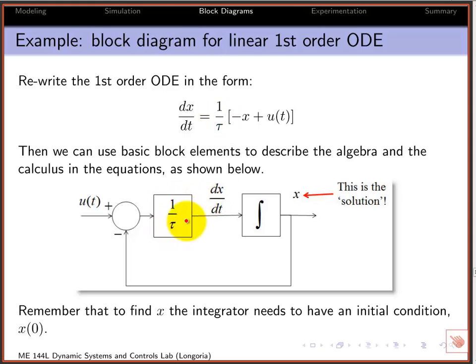And I need to multiply it by the sum of two signals, one is a negative of the state itself, and the other one is an input. So I'm creating this sum with a sum block. So u, and you add that in, and you subtract x. But x comes out of that integration, right?